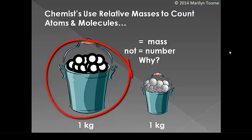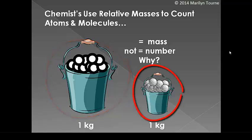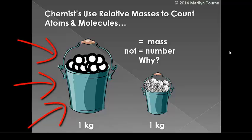On the left, we have a bucket of ping pong balls. On the right, we have a bucket of golf balls. So these buckets both weigh the same amount, one kilogram. But if I asked you, in which bucket do we have more number of balls, which one would you say? You would obviously say the one on the left, the ping pong balls, because ping pong balls are way lighter than golf balls. So you need a lot more of them to weigh the same amount.